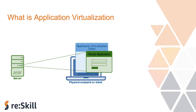In an application virtualization solution, you install your application in a server located in your data center. With the use of a streaming gateway or streaming server, you stream this application to your endpoint device. You use an application virtualization client to access these published applications. The market leaders in application virtualization are Citrix and VMware Horizon. However, when COVID hit, AWS AppStream became popular among multiple companies.